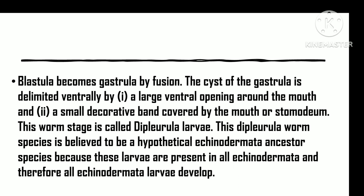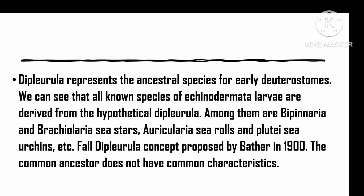All well-known forms of echinoderm larvae are derived from this hypothetical larva. Among them fall the bipinaria and the brachiolaria of the sea stars, auricularia of the sea cucumbers, and the plutei of the sea urchins, etc. So the De Dipleurula concept was pronounced by Bather in 1900.